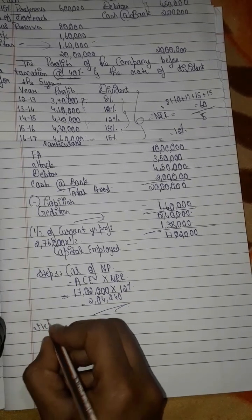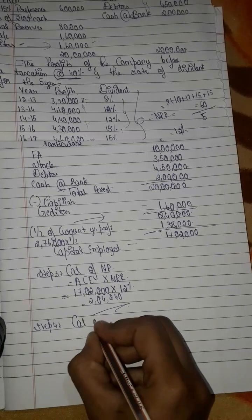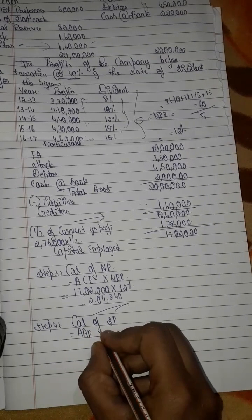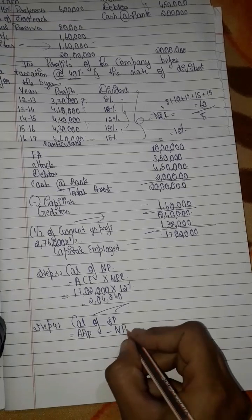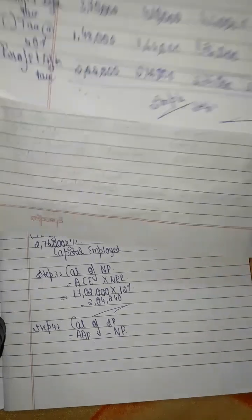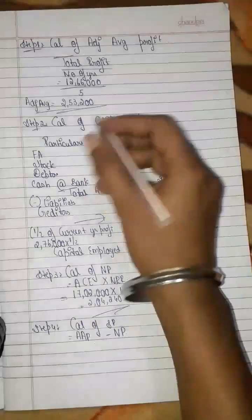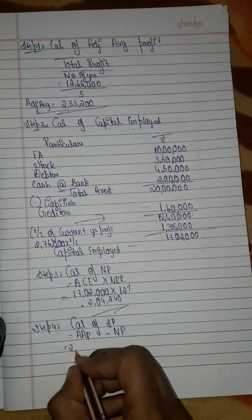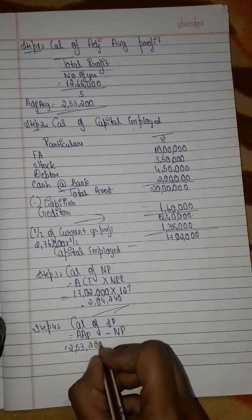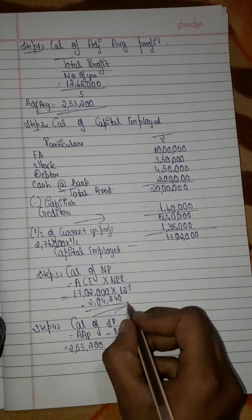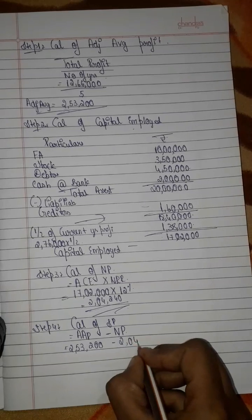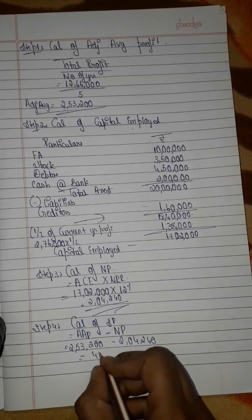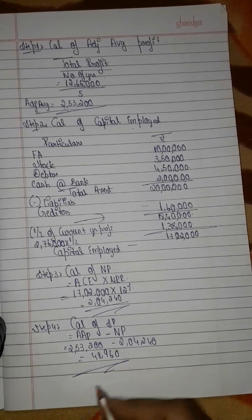Step 4: Calculation of super profit. Formula: Adjusted average profit minus normal profit. Adjusted average profit (Step 1) = Rs. 2,53,200 minus normal profit Rs. 2,04,240. Super profit = Rs. 48,960. This is the Step 4 answer.